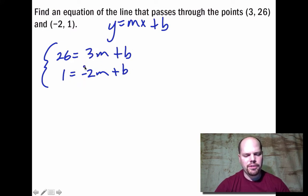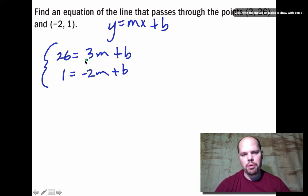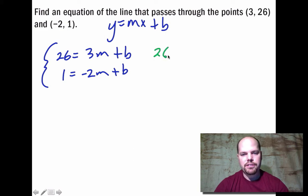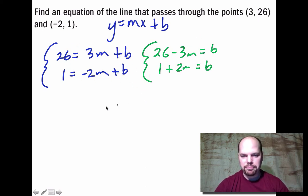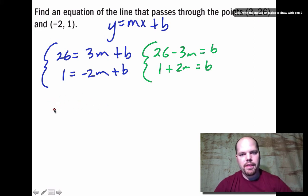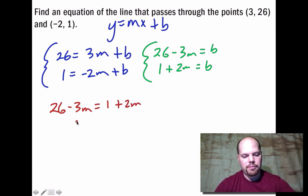This system isn't immediately set up for substitution, so we solve both equations for b. Subtracting 3m from the first: b = 26 - 3m. Adding 2m to the second: b = 1 + 2m. Since both expressions equal b, we set them equal to each other: 26 - 3m = 1 + 2m.